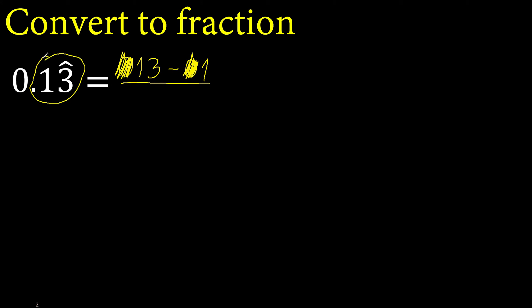After the point, there is one number under the symbol. One number. Therefore, 9 one time. After the point, there is one number outside the symbol. One time. Therefore, 0 one time.